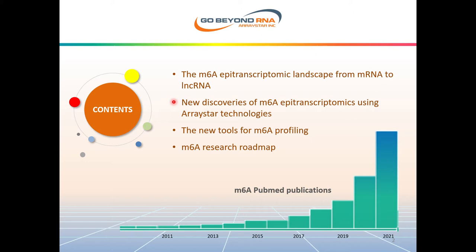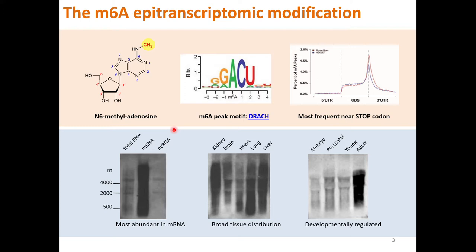We will introduce new powerful tools for better M6A profiling and the research roadmap ahead. Among the RNA modifications, M6A is the most prominent epitranscriptomic modification on mRNA. As shown in these immunoblots, M6A modifications are broadly present in all tissues and are developmentally regulated from embryo to adult.